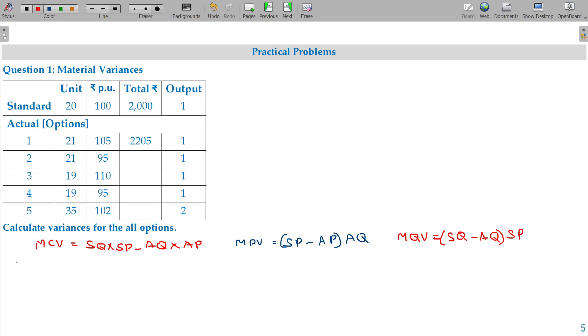Let me start with option 1. Option 1, material quantity, standard quantity into standard price, 20 into 100, 20 into 100 minus actual quantity, this one, 21 into 105.